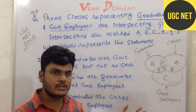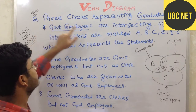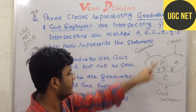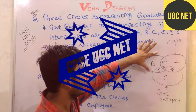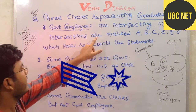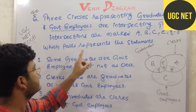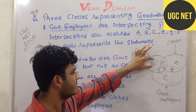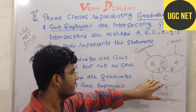So let's come to the question. In the question, it is mentioned that three circles are representing graduates, clerks, and government employees. They are intersecting, and the intersecting parts are marked as A, B, C, D, E, F, G, and H. Every area is represented with a different name.